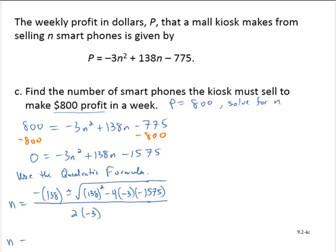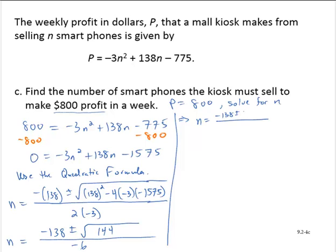So then n would equal negative 138 plus or minus square root. Now simplifying under the radical, 138 squared minus 4 by negative 3 by negative 1,575 gives me 144 over negative 6. So then that would give me that n is negative 138 plus or minus square root of 144 is 12 over negative 6.